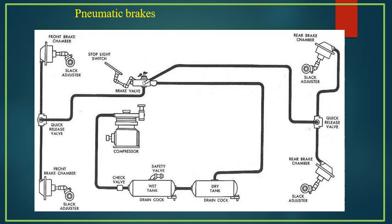Today we have learned about the different types of braking systems and the functions of the braking system. We covered several types including friction, drum, disc, mechanical, vacuum servo, hydraulic, and pneumatic brakes. In the next class, we will learn about the anti-lock braking system, which is another very important category of braking system. Thank you.